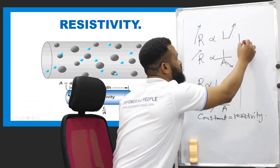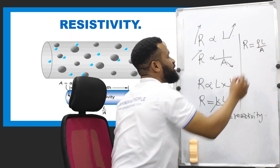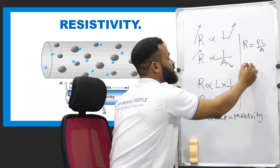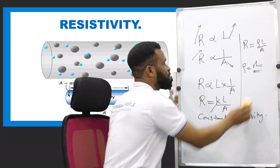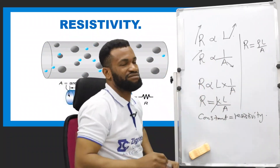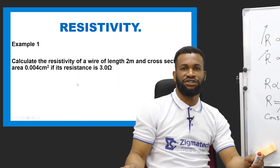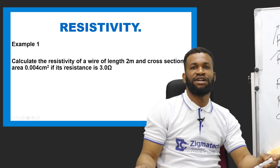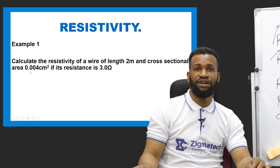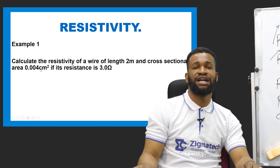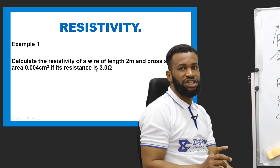We are going to look at a question on resistivity. Calculate the resistivity of a wire of length 2 meters and cross-sectional area of 0.04 cm squared, if its resistance is 3 ohms. It looks easy, but requires careful unit conversion.